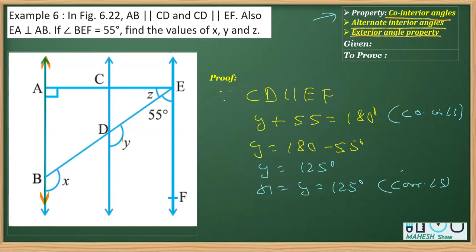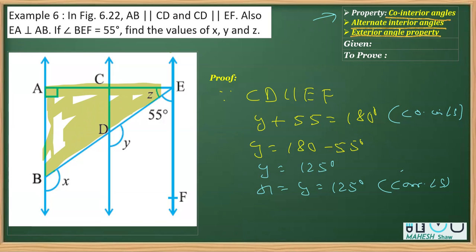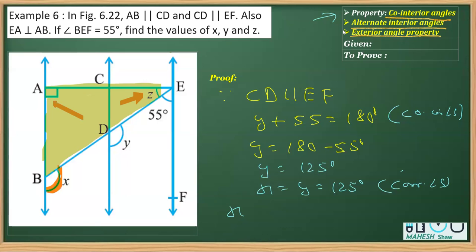Now for the value of z, consider this triangle. We know the value of its exterior angle, which is x. Since x is the exterior angle, it should be equal to the sum of its two interior opposite angles — that is, 90 degrees and z. So we write: angle x equals 90 plus z, from the exterior angle property.